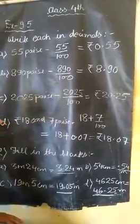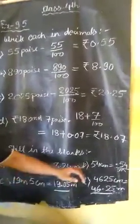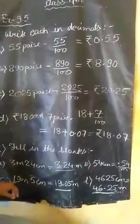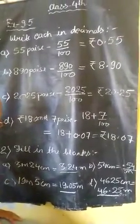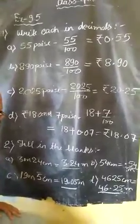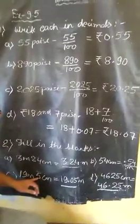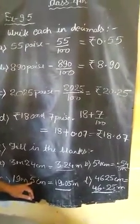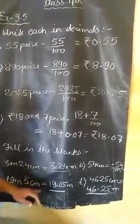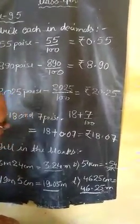Question c: 19 meters 5 centimeters. After changing 5 centimeters it will be 0.05, and add 19, it will be 19.05 meters.